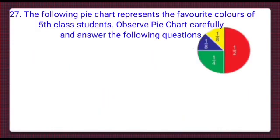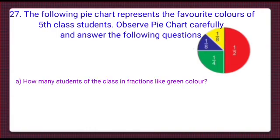That is question number 27 for today's lesson. The following pie chart represents the favorite colors of fifth class students. Observe the pie chart carefully and answer the following questions. Part A: how many students of the class in fractions like green color? We can see one-fourth (1/4) fraction likes green color.